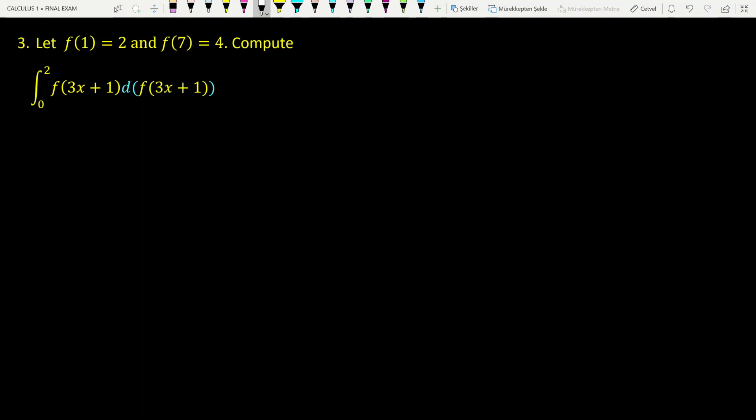In the third question, the values of f at the point 1 and 7 are given in this problem. It is requested to find the integral of this function from 0 to 2.